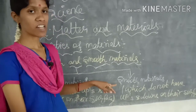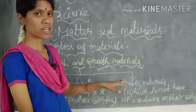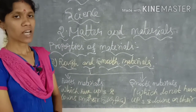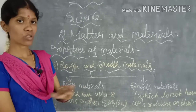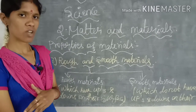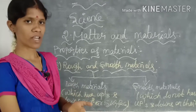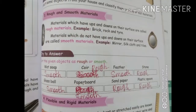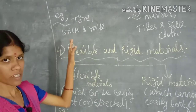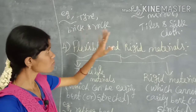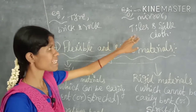In the case of a smooth material, the material does not have an up surface and a down surface. For example, your mirror — the front side and the back side are both the same; we can't differentiate which one is the up surface or the down surface. Examples for rough materials are tire, brick, and rock. Examples for smooth materials are mirror, tiles, and silk cloth.